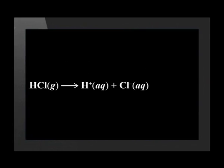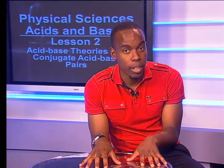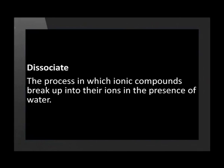In our definitions for acids and bases, we mention the terms ionize and dissociate. To explain the production of ions in an acid-base solution, let us define these terms. Ionizing is the process in which covalently bonded compounds, such as acids, break up into ionic substances for the first time — we speak about acids ionizing. Dissociation is the process in which ionically bonded compounds, such as bases, break up into their ions in the presence of water.